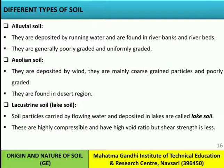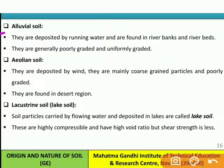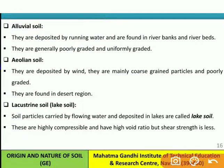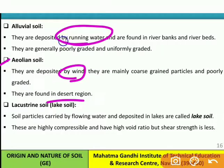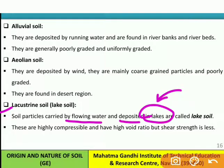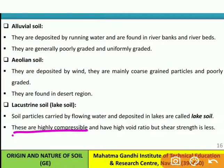Now let's discuss the different types of soil. Alluvial soil is deposited by running water and found in river banks and river beds; it is generally poorly graded and uniformly graded. Aeolian soil is deposited by wind, mainly coarse-grained and poorly graded, found in desert regions. Lacustrine soil (lake soil) consists of particles carried by flowing water and deposited in lakes; it has high compressibility, high void ratio, and low shear strength.